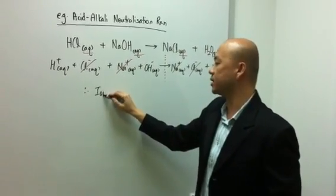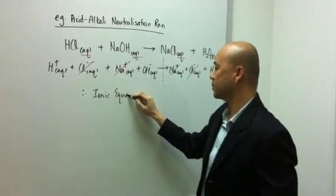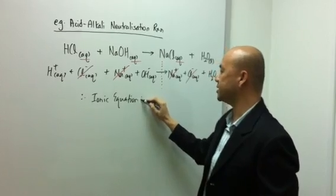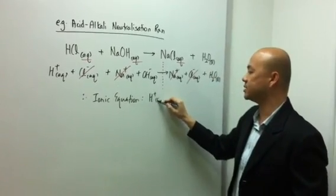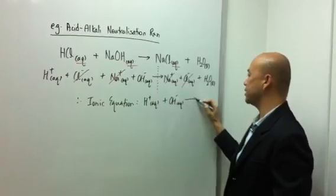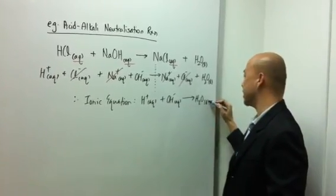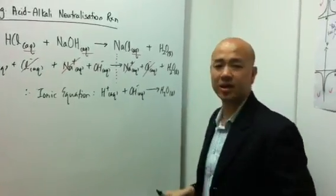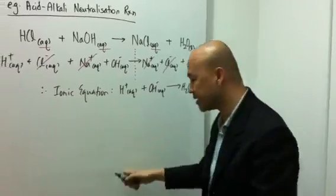And after you cancel them out, then you will get your ionic equation. Okay? So in this case, the ionic equation will become H plus aqueous plus OH minus aqueous and it gives you water as the product. Okay? So this is how we get an ionic equation. I hope you are enjoying yourself.